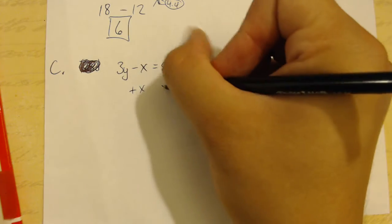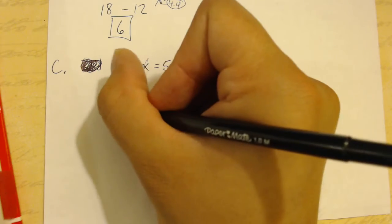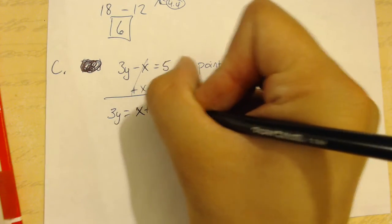So, we'll add x to each side. And we get 3y equals x plus 5.